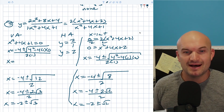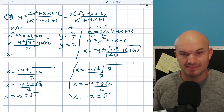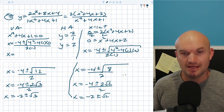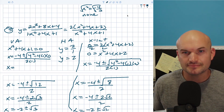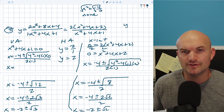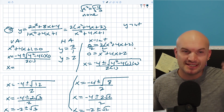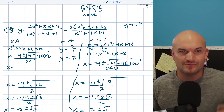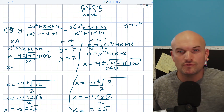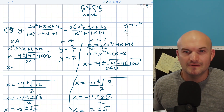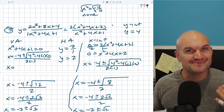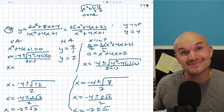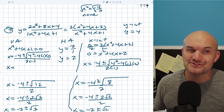For the y-intercept, you're just taking constant over constant. That's four over one, so y equals four. Some of these can be really easy, and sometimes they can be really tricky.